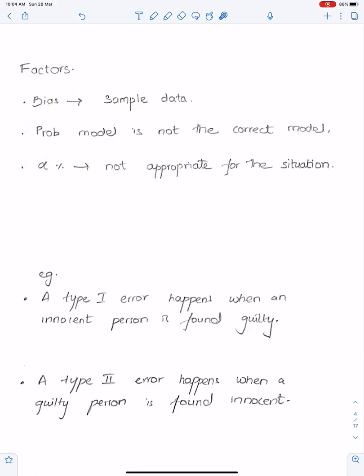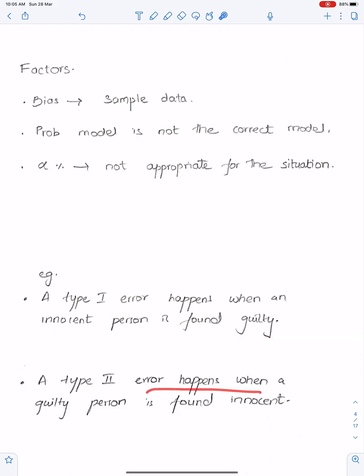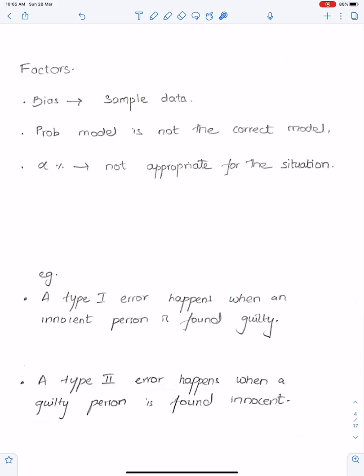A real-world example: a Type 1 error happens when an innocent person is found guilty. A Type 2 error happens when a guilty person is found innocent — because of the wrong interpretation of the lawyer.